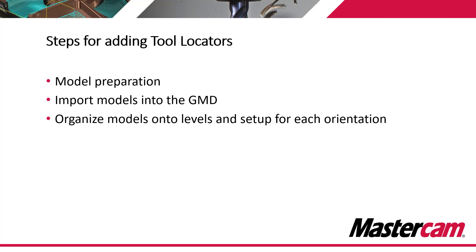Next, we're going to take those imported models and organize them onto levels. Those levels are going to be individual for each locator we're adding, and we also need to represent each orientation that locator will be used in. For example, if we have a turret style machine with a locator that can be used pointing towards the main spindle and the sub spindle, we'll set up two orientations of that solid model. The same would be true for a machine with an upper and lower turret — we need to define an orientation for the upper turret as well as the lower turret.